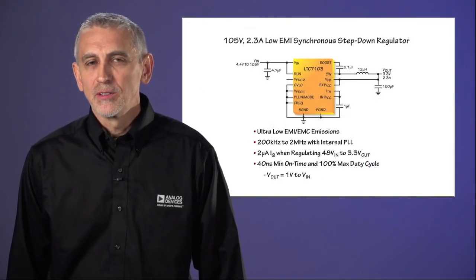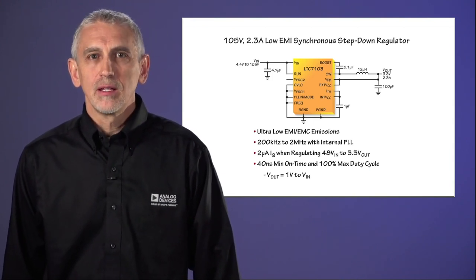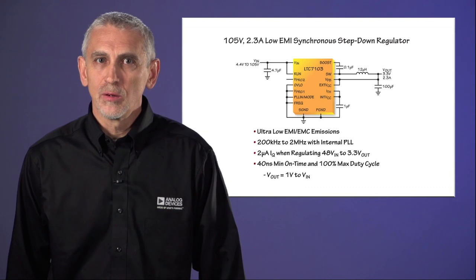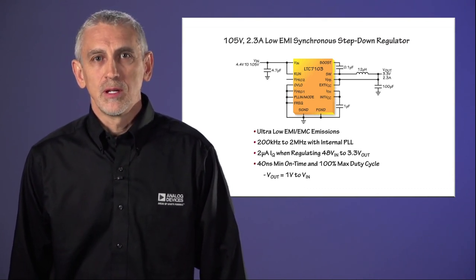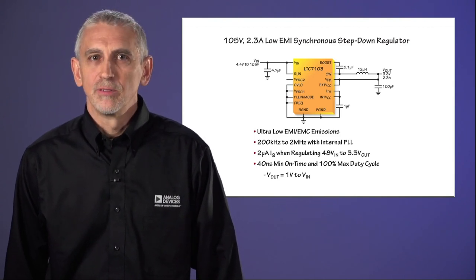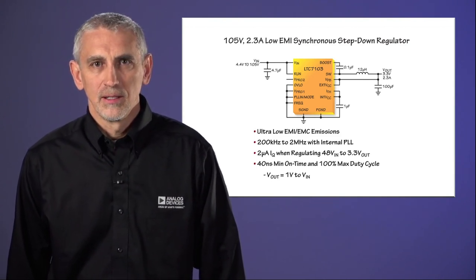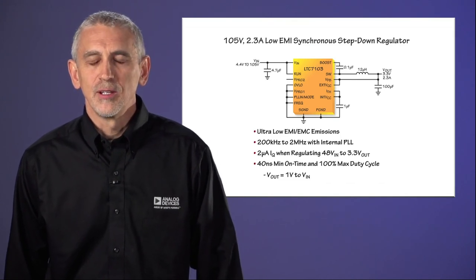Today, many electronic systems require power processing at high voltages while demanding increased efficiency and low EMI EMC emissions. The LTC7103 meets all of these challenges with an unprecedented combination of versatility and simplicity. Visit us at Analog.com for more information. Thank you.